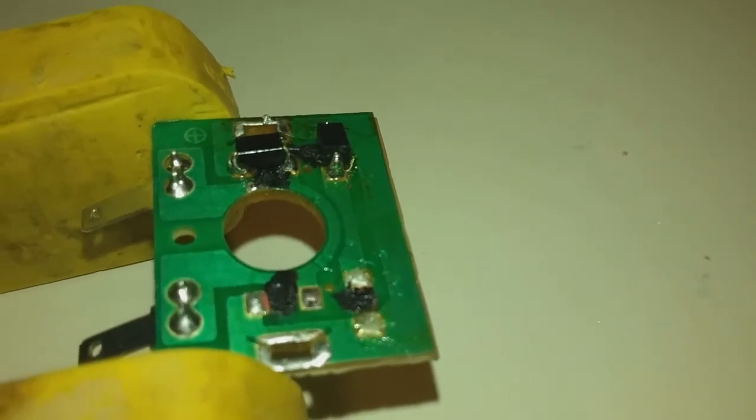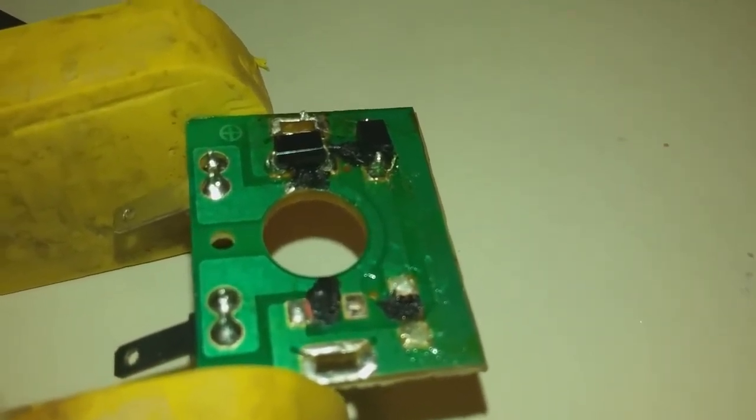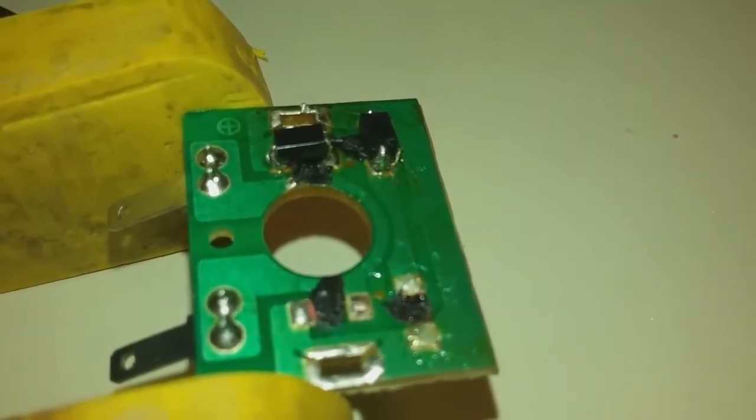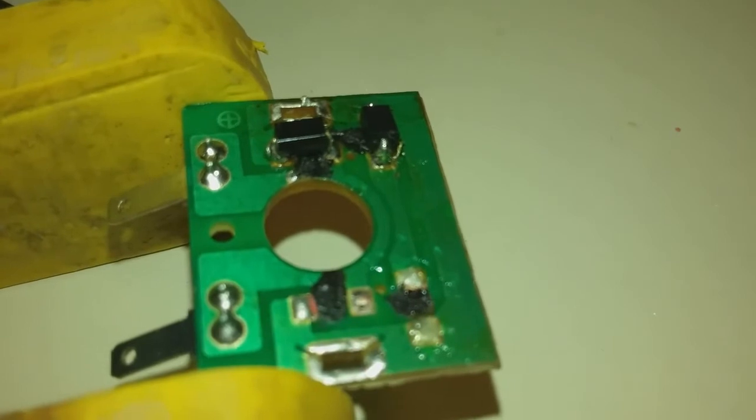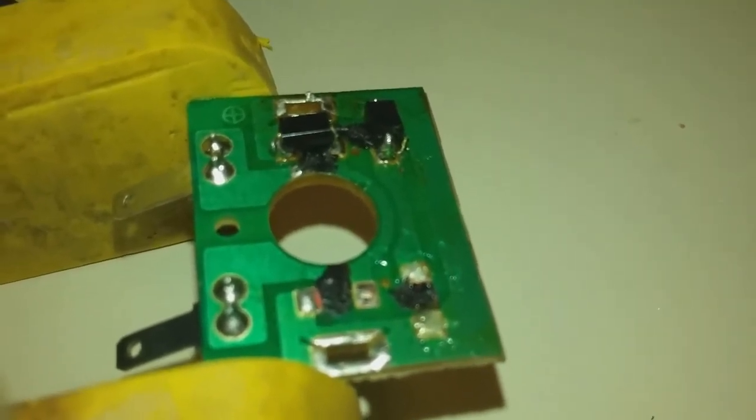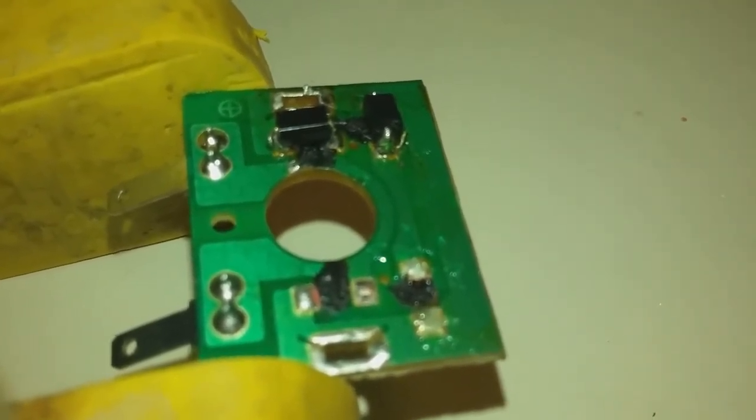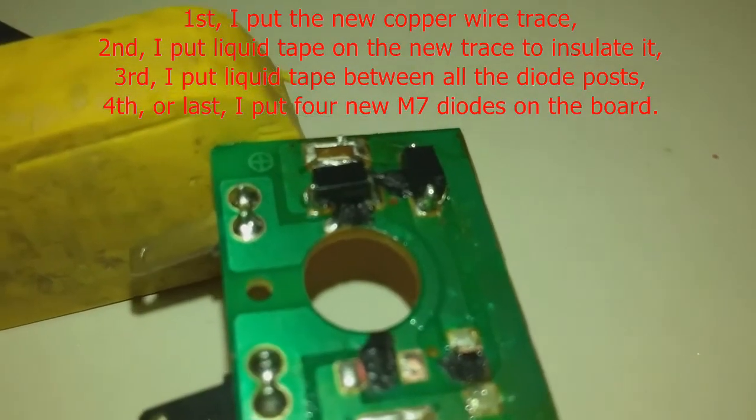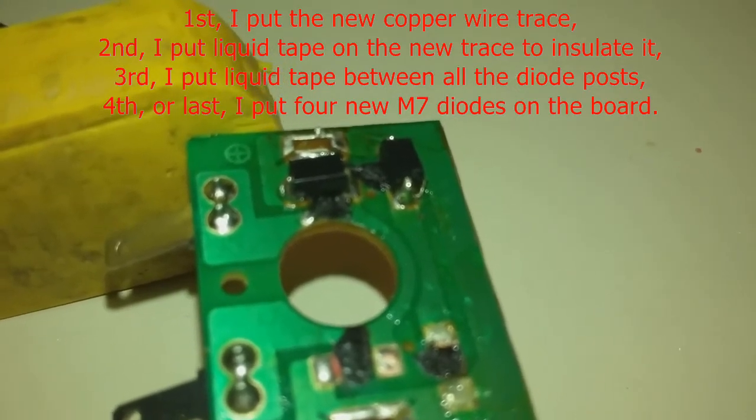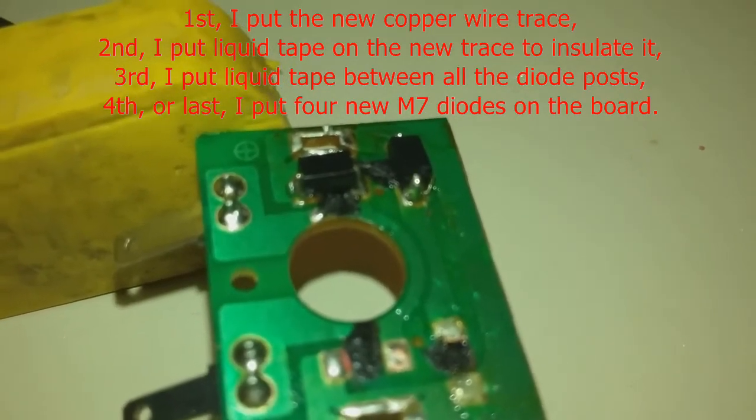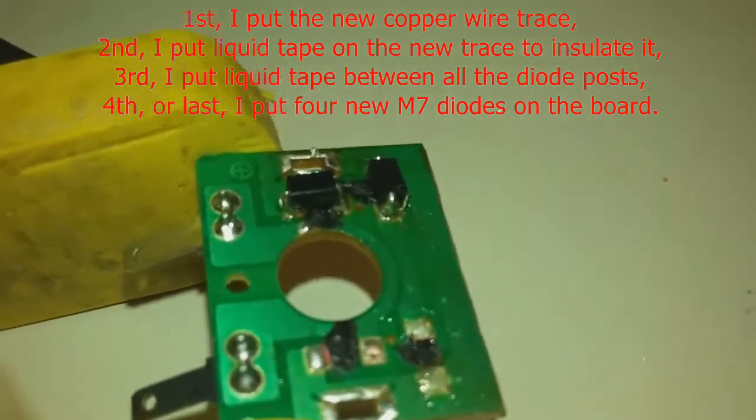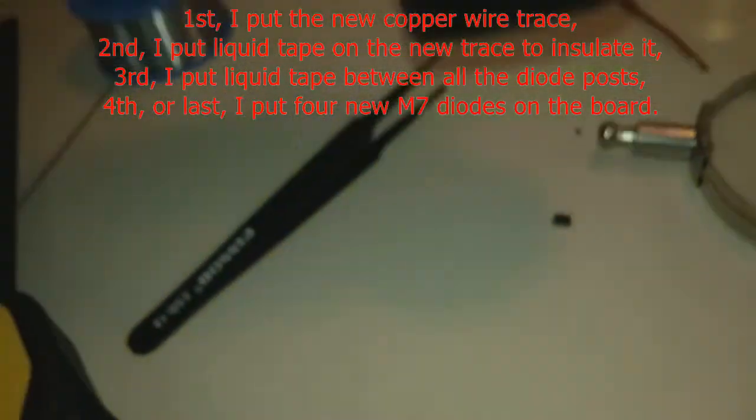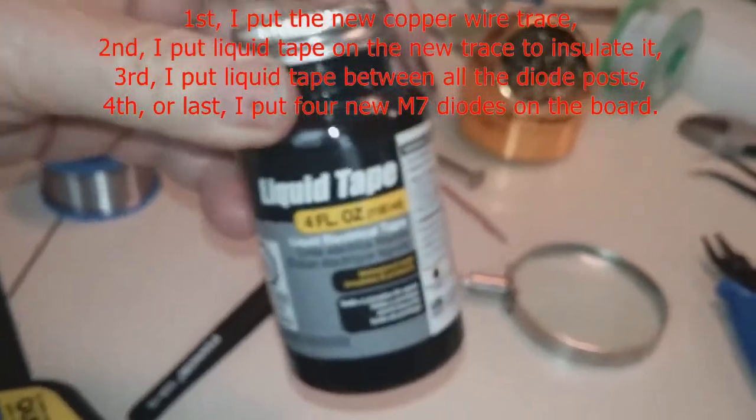I forgot to take some video after I put the wire on there, the jumper wire that's going to serve as a trace. But I did some continuity tests, and it was working great. Then I went ahead and I put brand new M7 diodes. Well, first I should say, after I put the wire, the trace wire, then I put this stuff here, liquid tape.